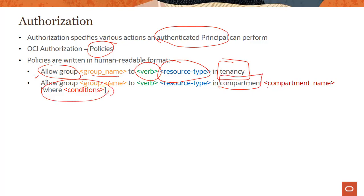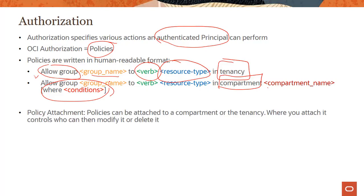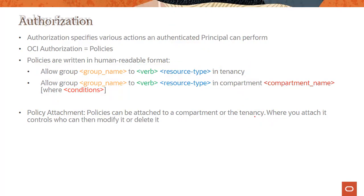These policies are very human-readable, like SQL statements. Policy attachment can be to a compartment or to an account. The simplest way is to attach to the account. Where you attach it controls who can modify or delete it. Compartments can be nested up to six levels deep, making it complex. Simplest approach: attach it to the tenancy. But keep in mind, where you attach controls who can modify or delete it.